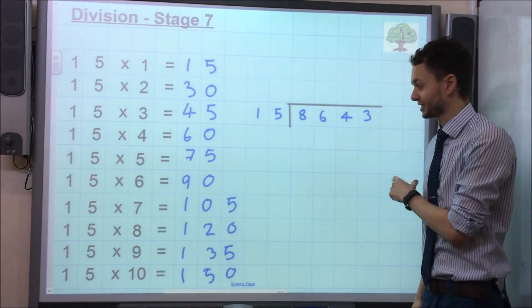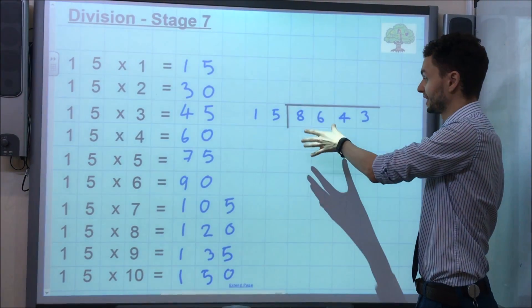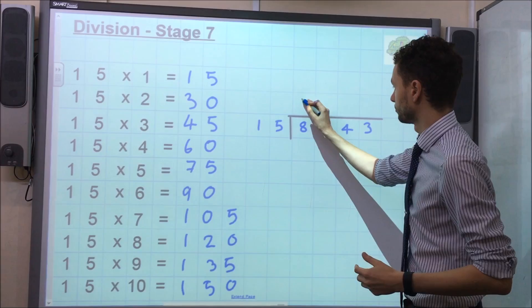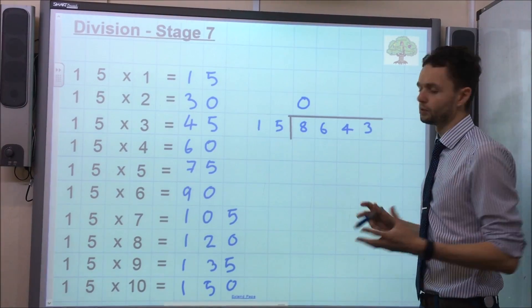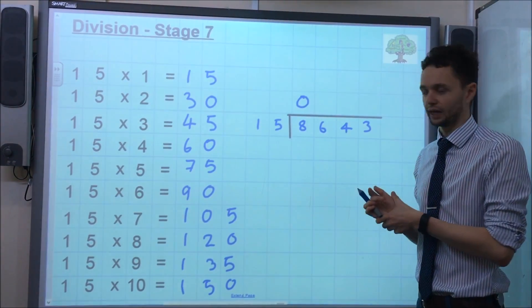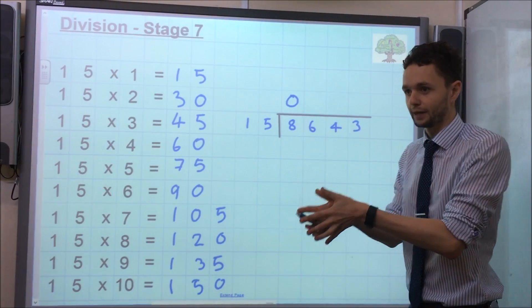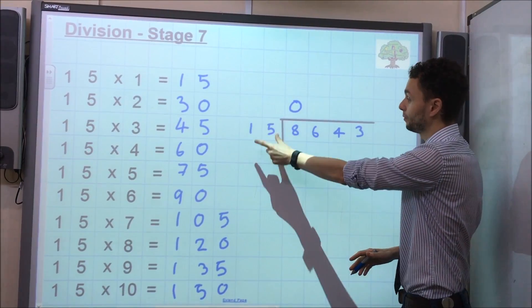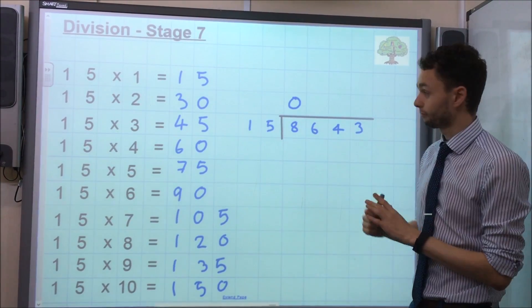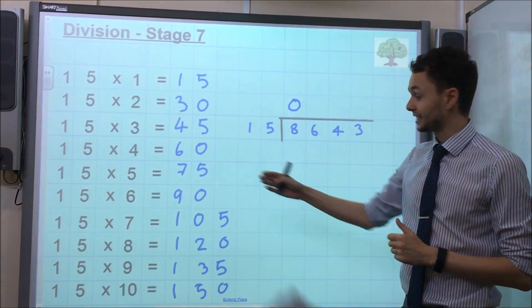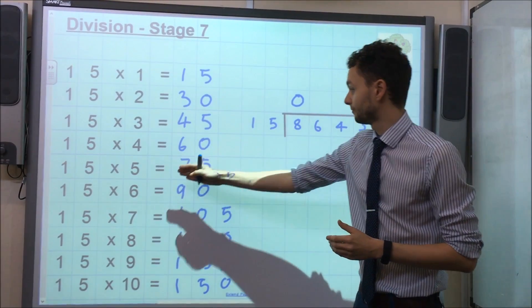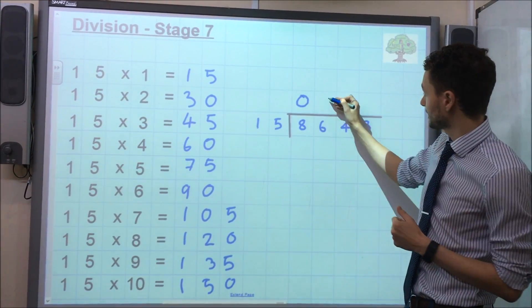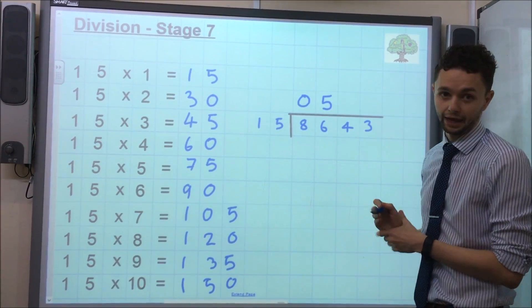So, we start off by saying, how many 15s go into the 8, remembering of course that's 8,000 and the answer is 0. So we just put a little 0 there and then we move on to actually solving the calculation. Now we can properly jump in and have a look at the numbers. So we combine these two now and we say, how many 15s go into 86? We go to our 15 times table and we can see that the closest number is 75, so that's 5 times 15. Because it's 5 times 15, that 5 goes at the top there.